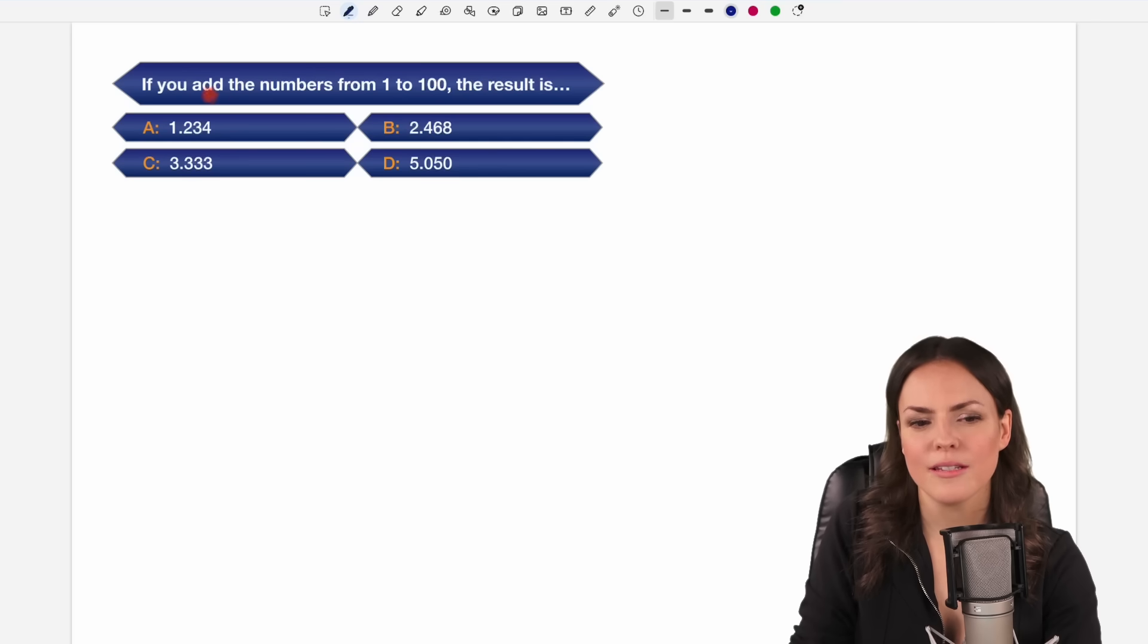I mean they want us to add the numbers from 1 to 100, so it would be 1 plus 2 plus 3 plus all these positive integers till we get to 98, 99 and finally 100.